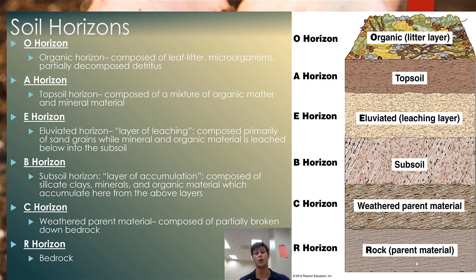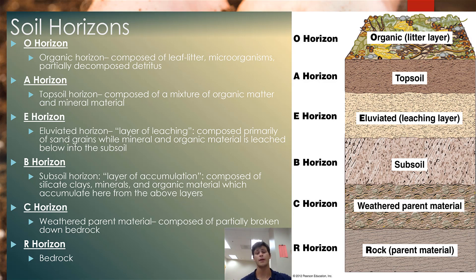Just below the O-horizon is the A-horizon — your topsoil horizon. This is composed of a mixture of inorganic and organic matter, mineral material, and water. This is where you'll find the bulk of your microorganisms and invertebrates such as earthworms, and it contains a lot of the nutrients that plants need.